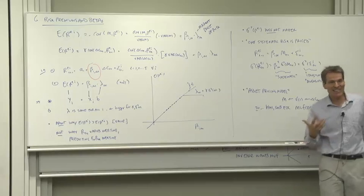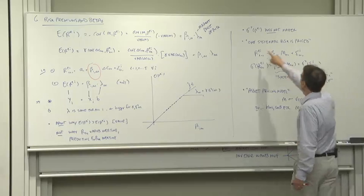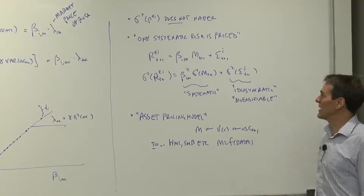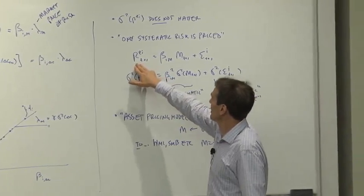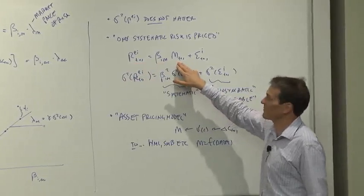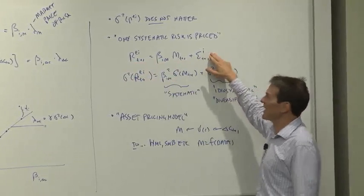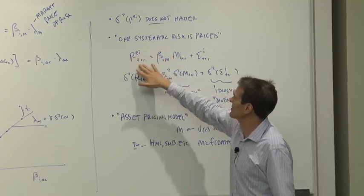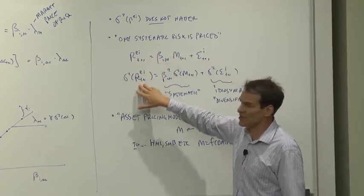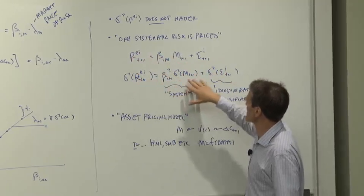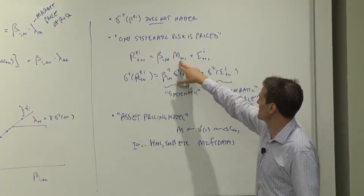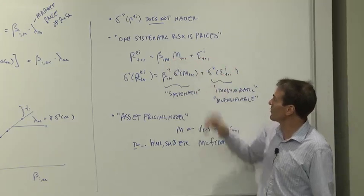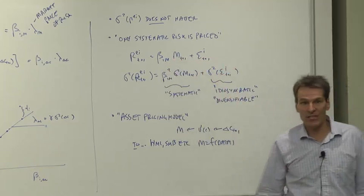Another way of saying that same classic proposition of finance is that only systematic risk is priced. What do those words mean? Well, think of running a regression of the return on the discount factor or consumption growth and a residual. That breaks apart the volatility of this return into two components. The volatility of the return is the component correlated with the discount factor or with consumption growth and an idiosyncratic component. Since those are regression, those two things are uncorrelated with each other.